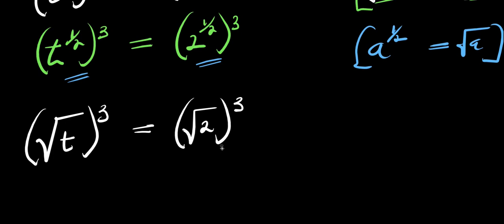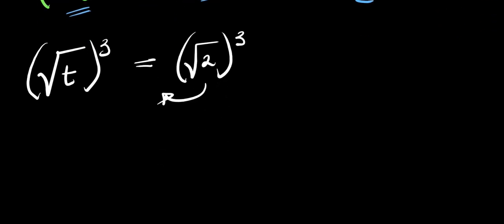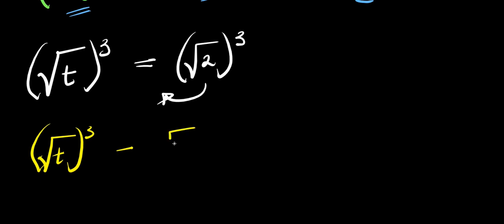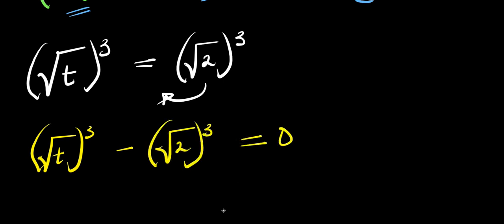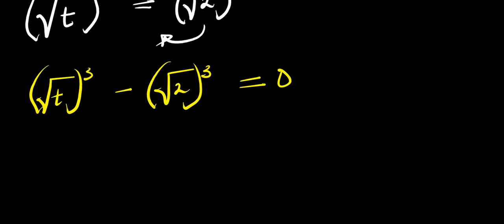The next thing we are going to do is move this over here. So we have square root of t raised to the power of three minus square root of two raised to the power of three equals zero.